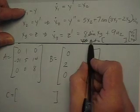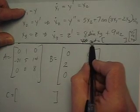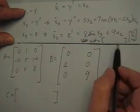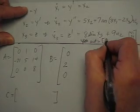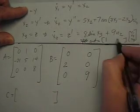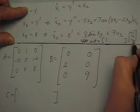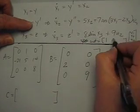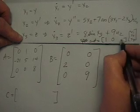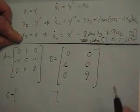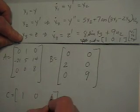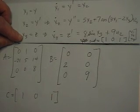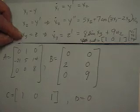Our outputs are y and z. The output y equals x1 and z equals x3. So our C matrix is [1, 0, 1]. The D matrix equals zero.